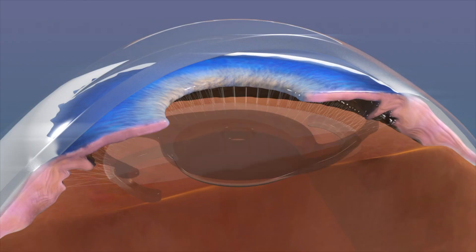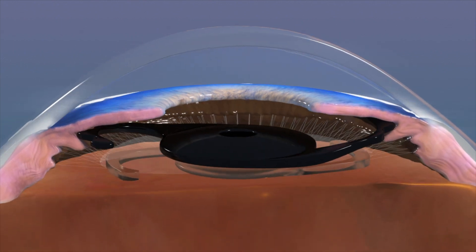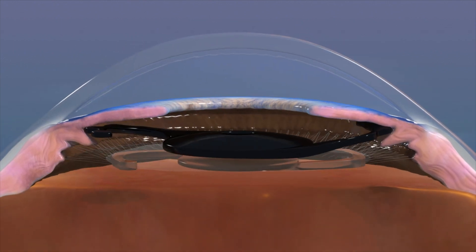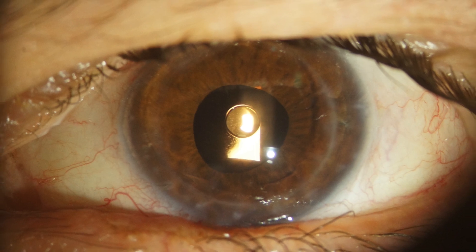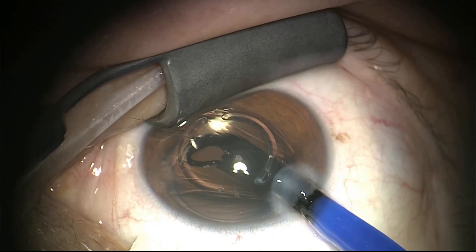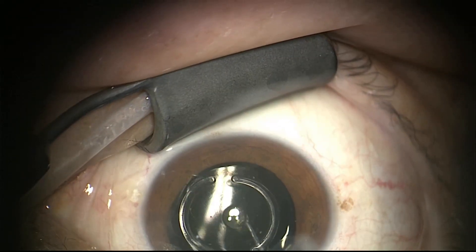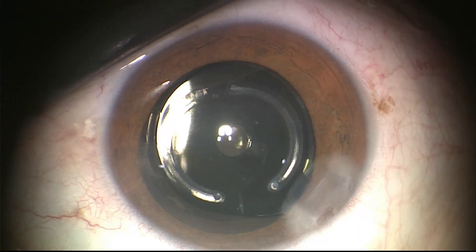The device is made of a foldable black hydrophobic acrylic and is intended for sulcus implantation in pseudophakic eyes in a piggyback configuration. Main indications are post-RK, post-PK, and keratoconus. In those cases, the pinhole effect can be a true hero.